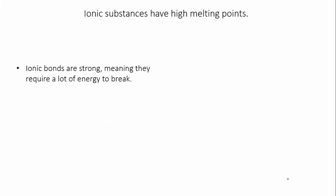So let's look at melting points first, melting and boiling points in fact, but we'll just deal specifically with melting points. Ionic substances tend to have high melting points because ionic bonds are very strong, which means they require a lot of energy to break.